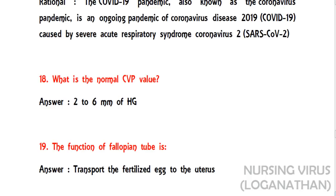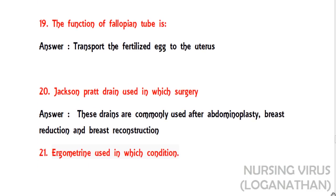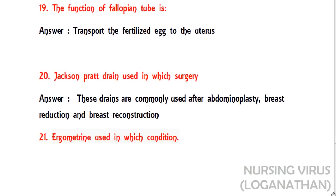The nineteenth question: what is the function of the fallopian tube? The function is to transport the fertilized egg to the uterus for the fertilization process. The twentieth question: the Jackson-Pratt drain is used in which surgery?